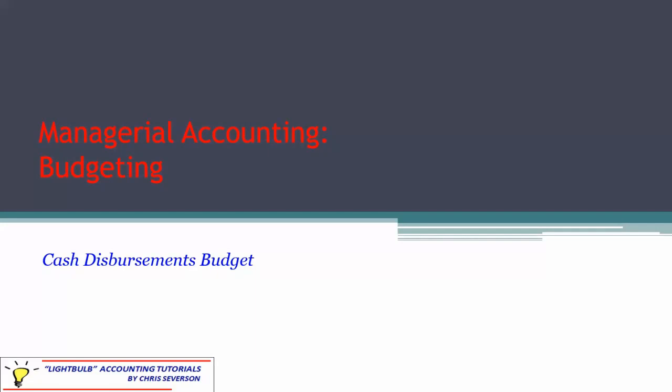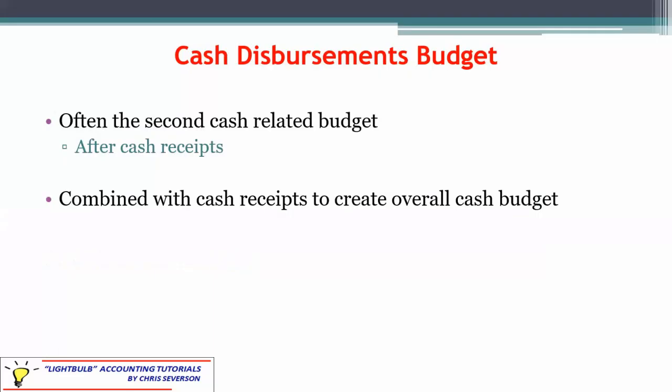Hello everybody and welcome to our discussion of the cash disbursements budget. By now we've already completed the cash receipts budget and we're moving on to the cash disbursements. This is generally the second cash-related budget after the cash receipts. After we're done with both these budgets, we're going to merge them together to create the overall cash budget, which also includes financing items.